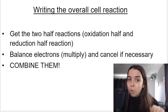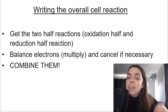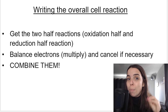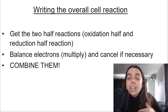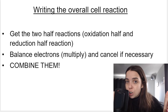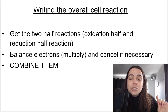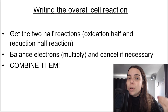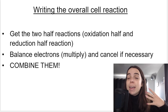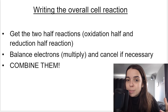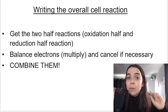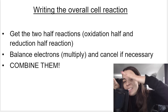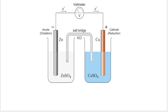So how do we do this? First, we need to get the two half reactions, and we do this using Table 4B. Then you will see that there are electrons that appear in both half reactions. We need to make sure that those electrons are balanced — in other words, they are the same. We may have to multiply to get this correct. When they are balanced, we can cancel them if necessary, and then we combine the two half reactions.